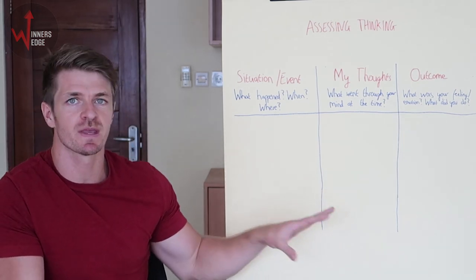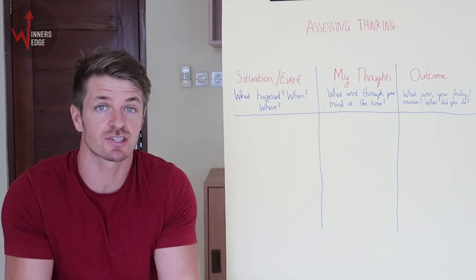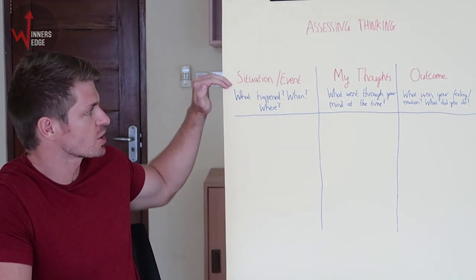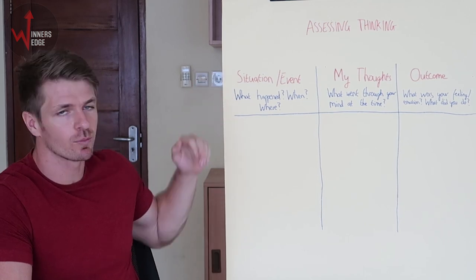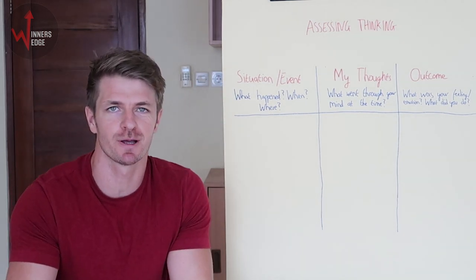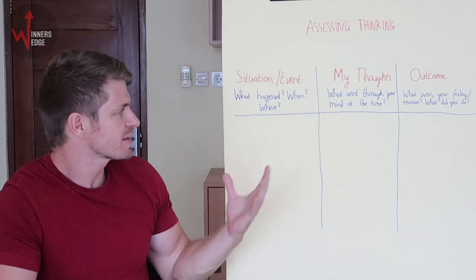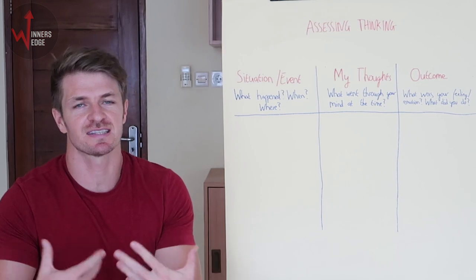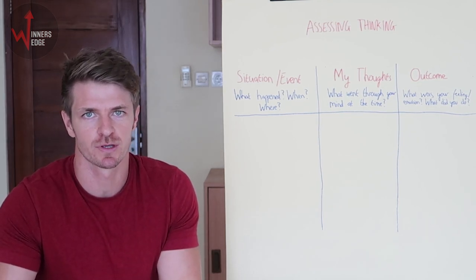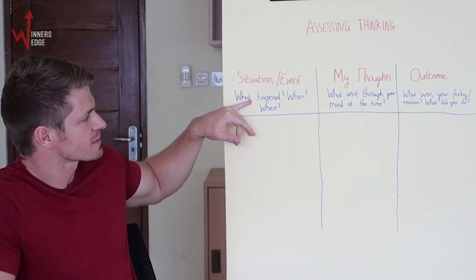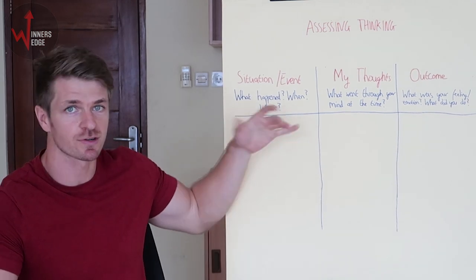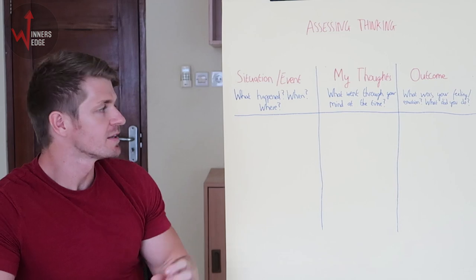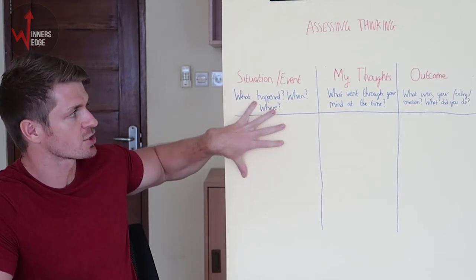The first phase is assessing your thinking — what actually happens during a mindset leak. The first element is the situation or event: what happens, when and where? Before we start to fix a problem, we need to identify it. Let's use the example: I had a few bad beats on PokerStars and I tilted at the end of my session. That happened on Friday evening on PokerStars. So we've got the situation.